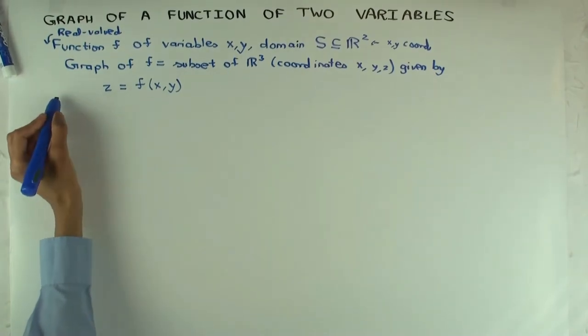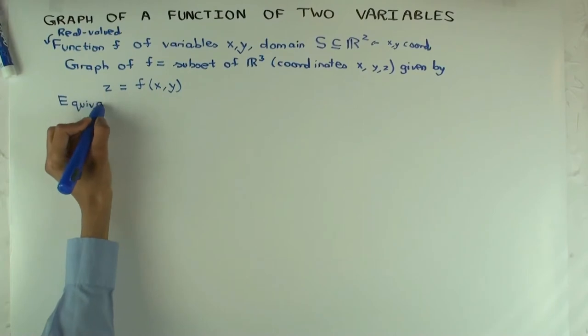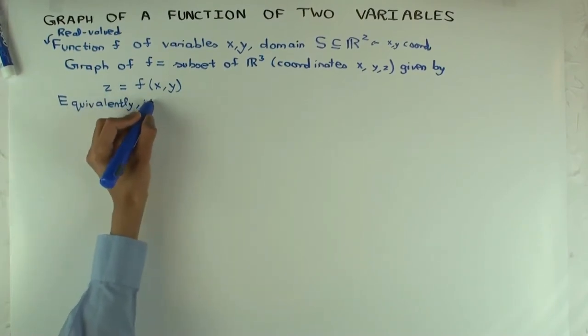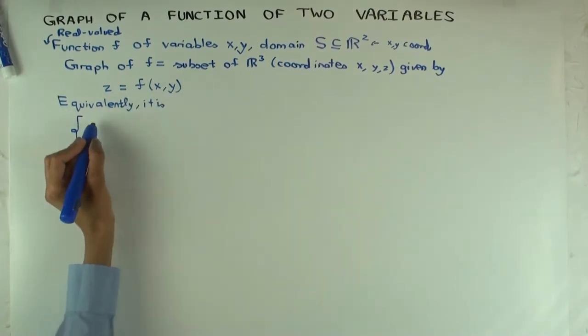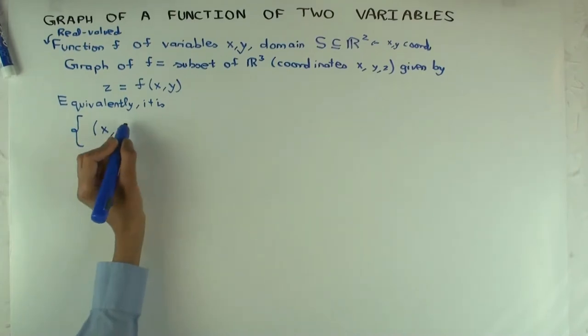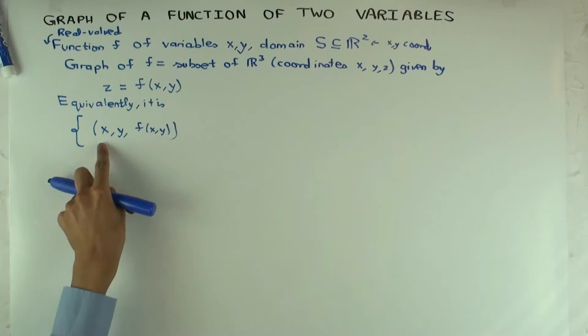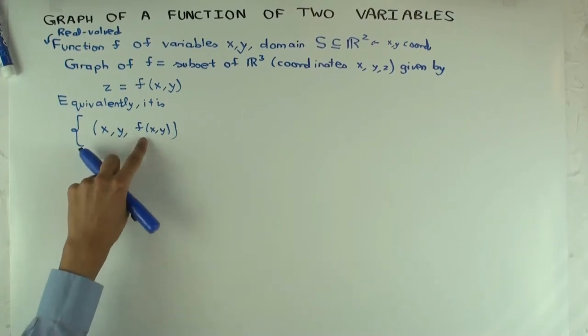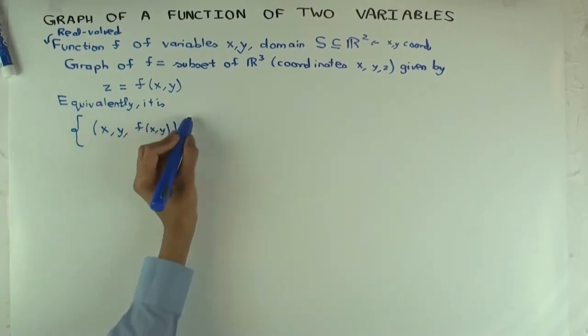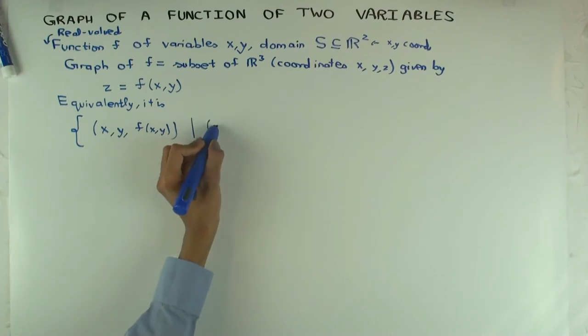Now another way of saying this is: it's the set of points (x, y, f(x,y)), so it's points where the x coordinate is x, the y coordinate is y, and the z coordinate is f(x,y), where (x,y) live in...